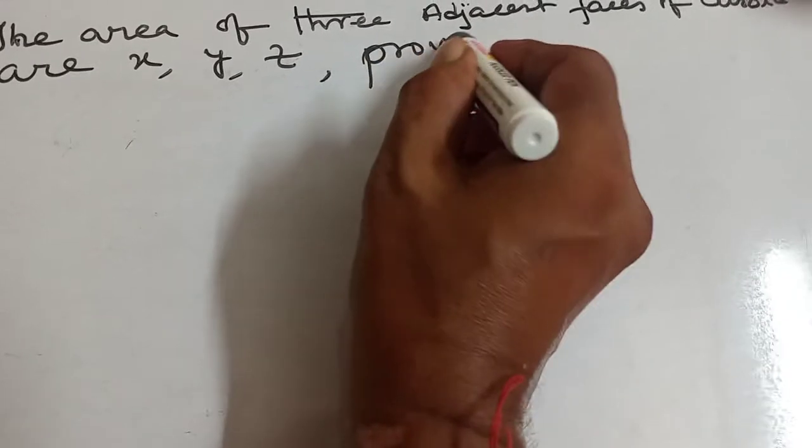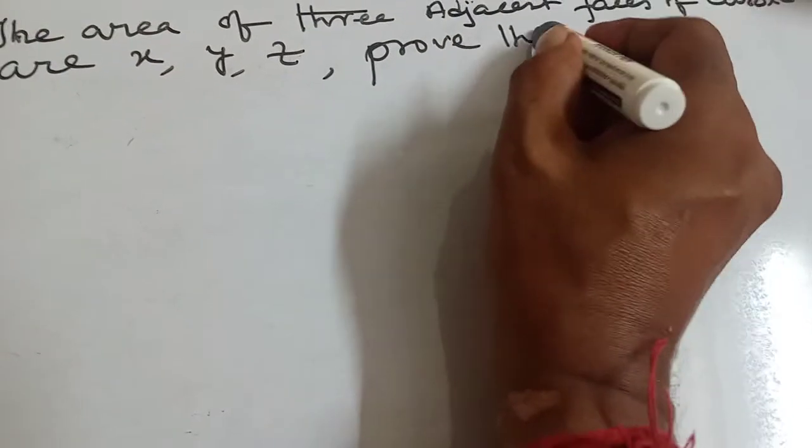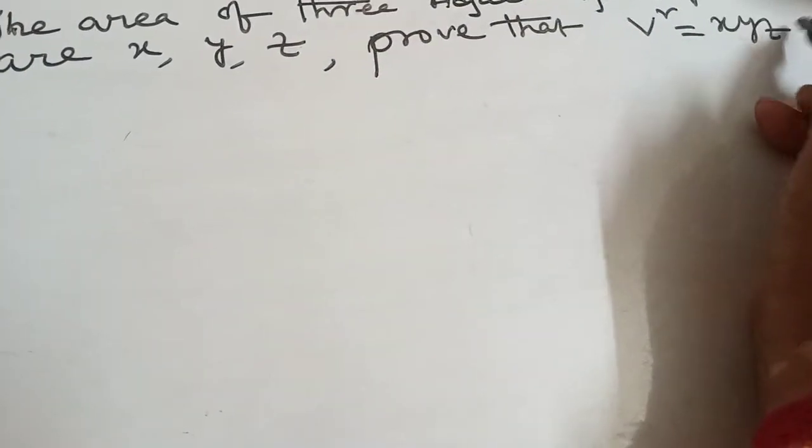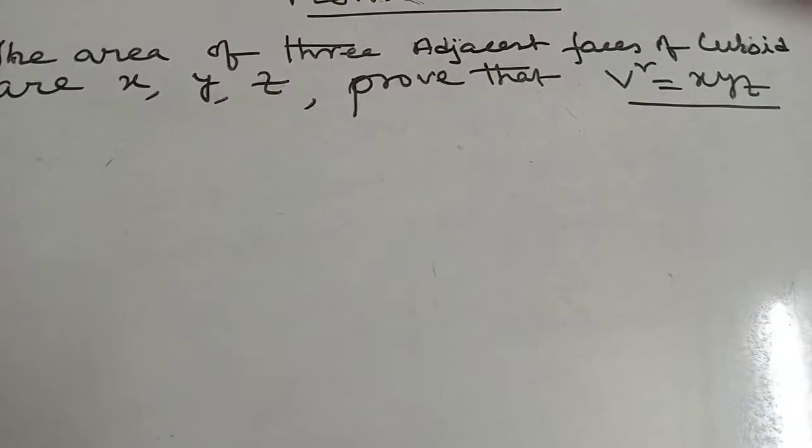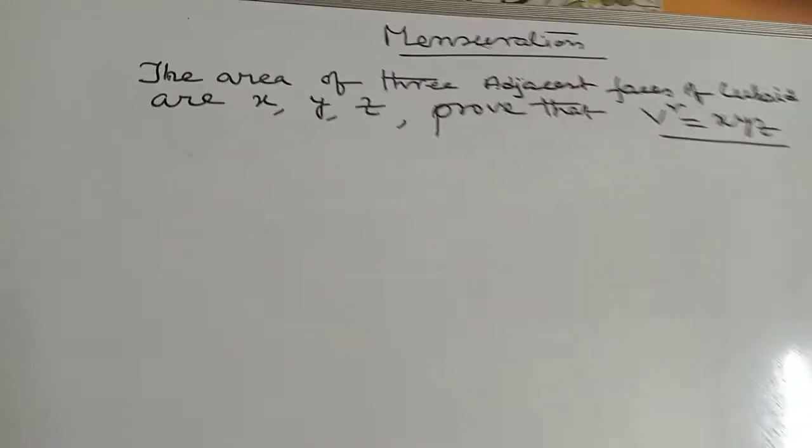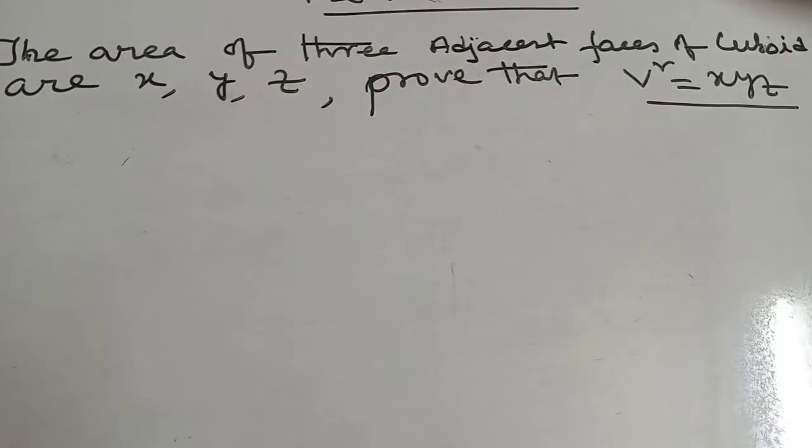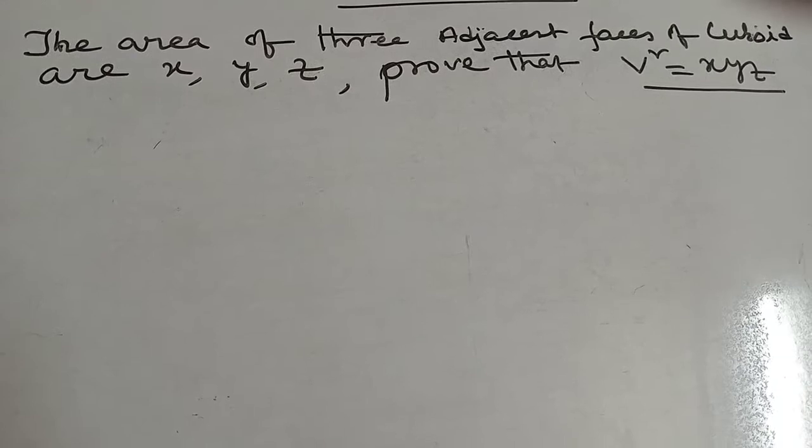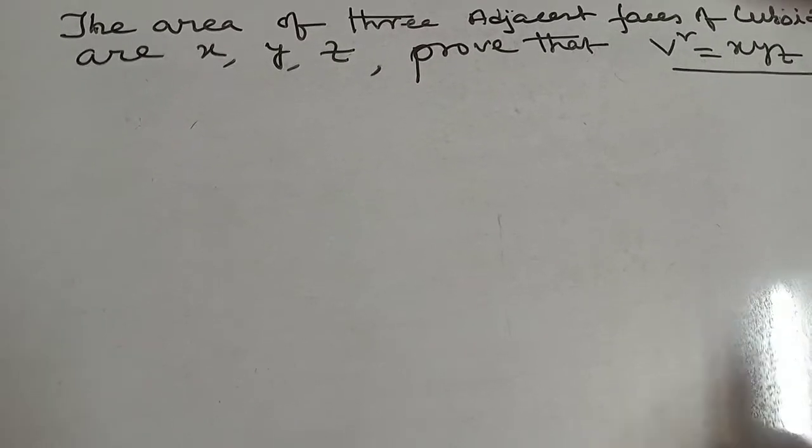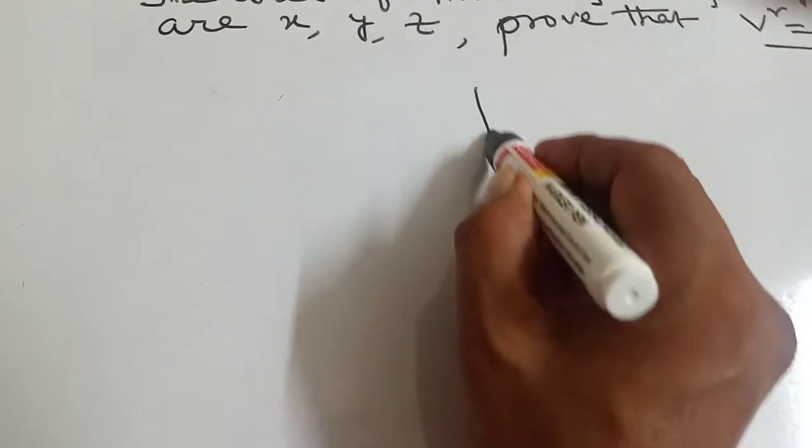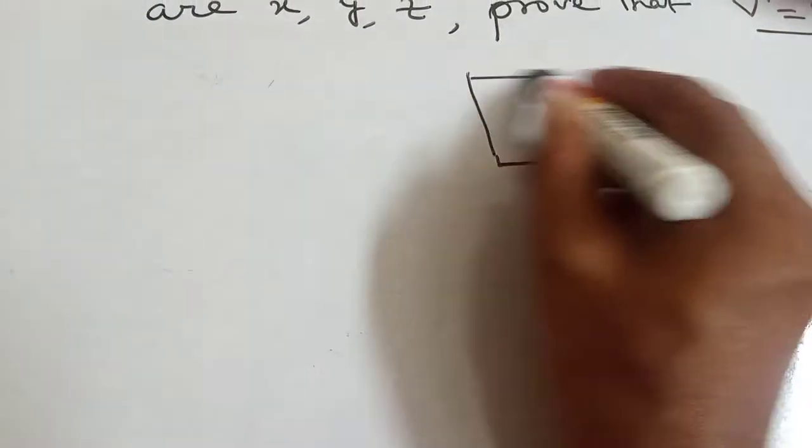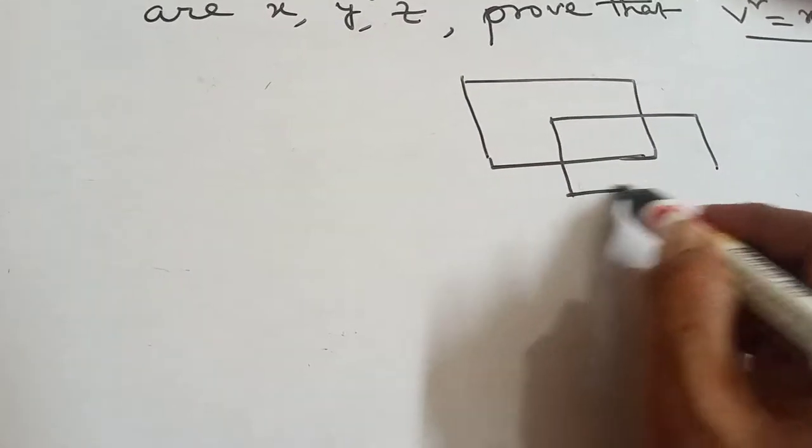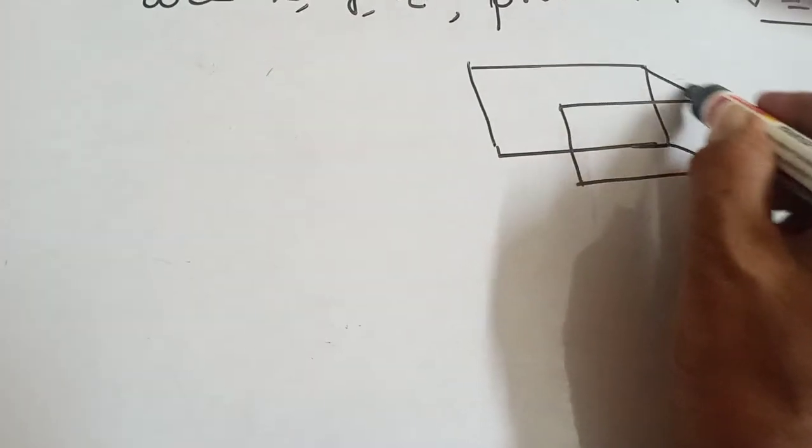V square equals x, y, z. That means volume square equals x, y, z.